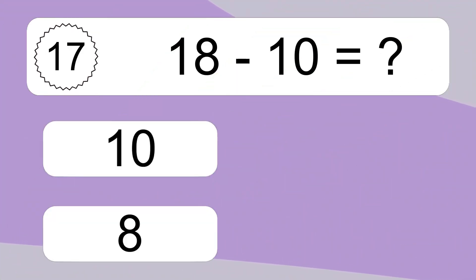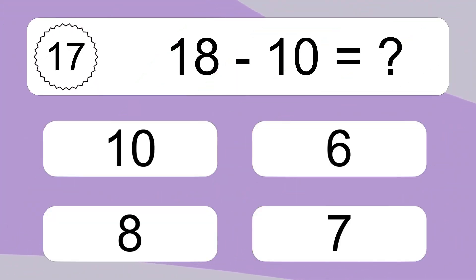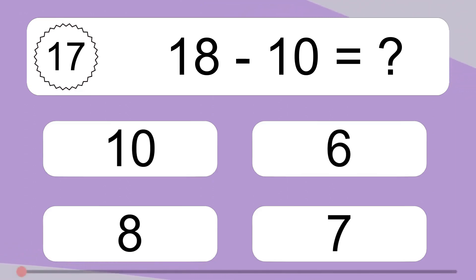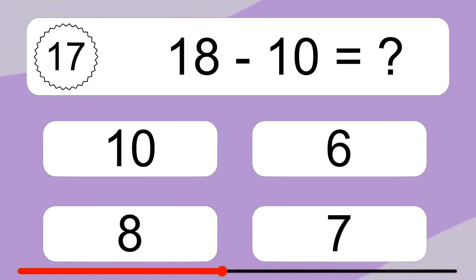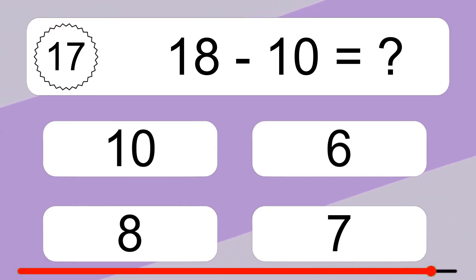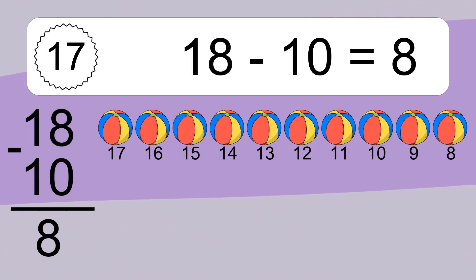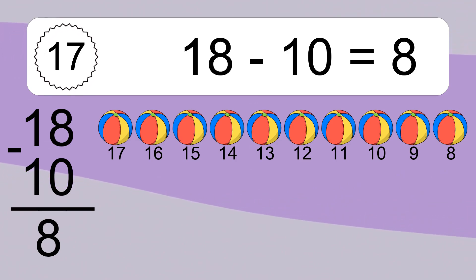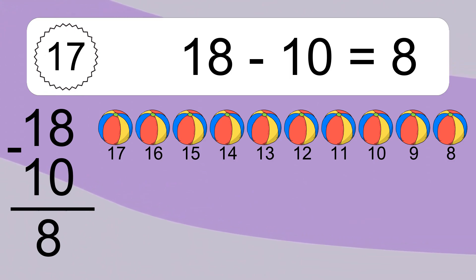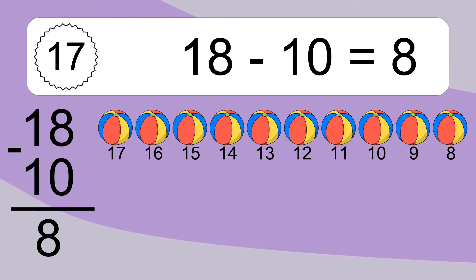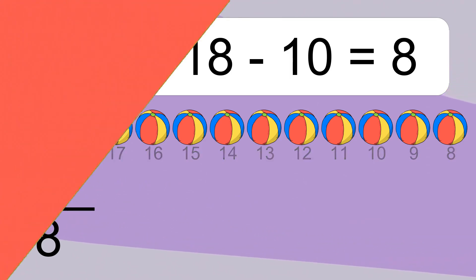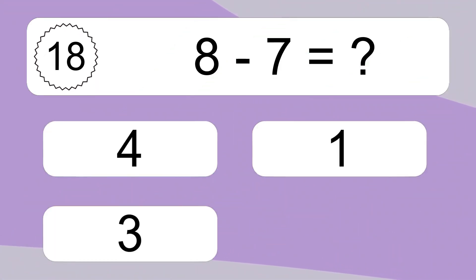18 minus 10 equals what? 18 minus 10 equals 8. Let's count it: 17, 16, 15, 14, 13, 12, 11, 10, 9, 8.